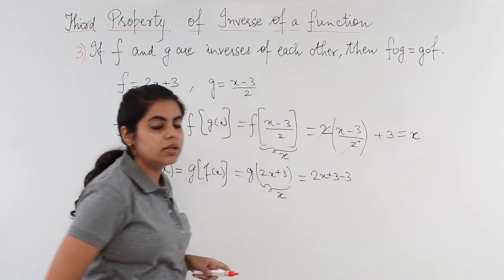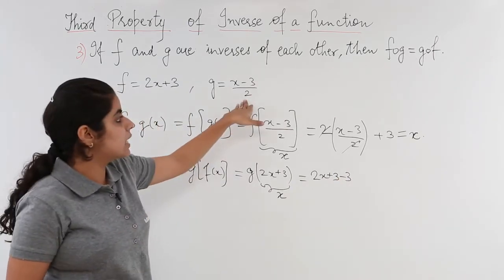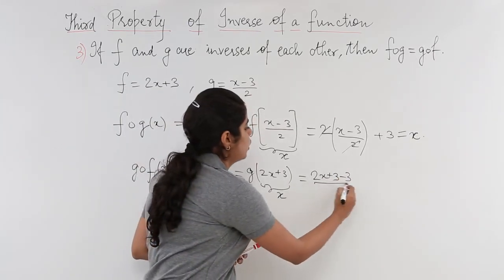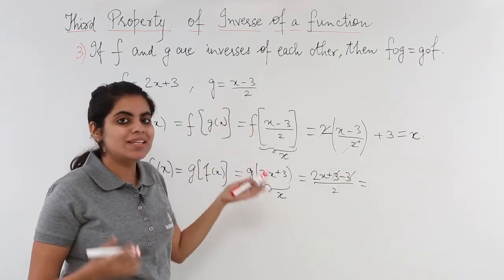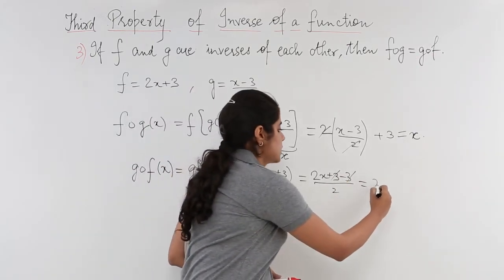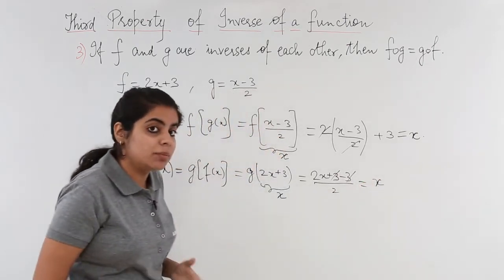Then the denominator has 2, so I wrote upon 2. Now minus 3 plus 3 gets cancelled. 2x upon 2 will give me just x. So we see something.